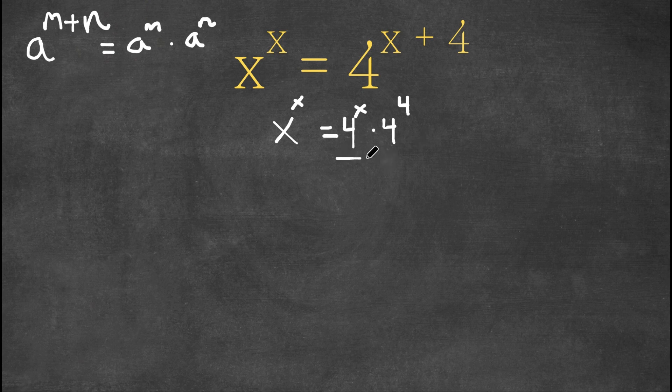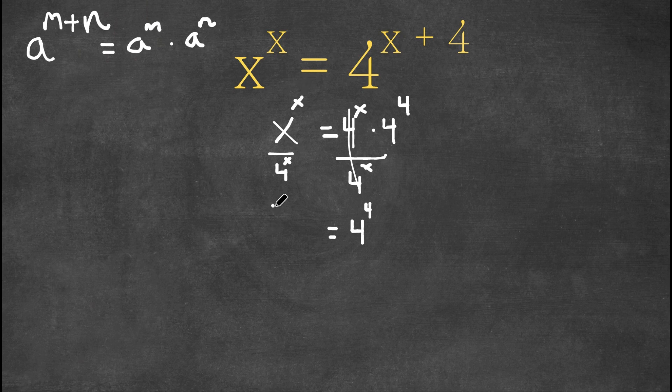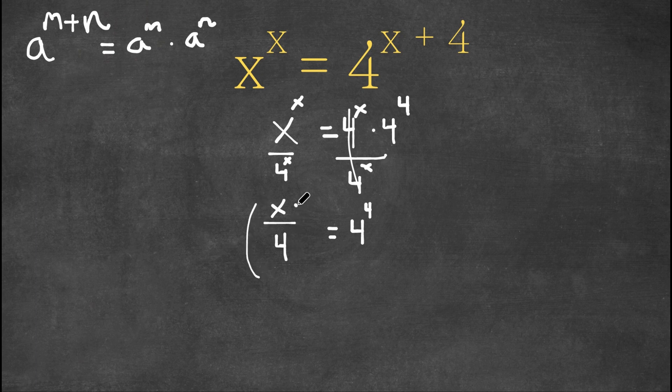So now what I'm going to do is I'm going to divide by 4 to the power of x on both sides. And by doing that these two cancel out, so we have 4 to the power of 4 equals x over 4 to the power of x. Because both of these are to the power of x, we could just say that's x over 4 to the power of x.